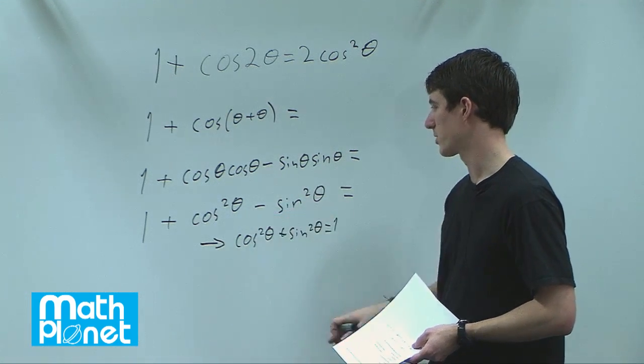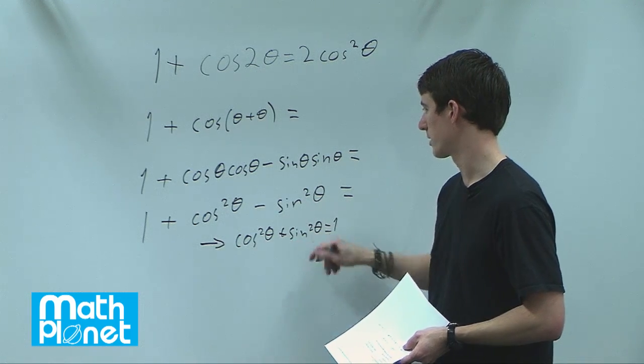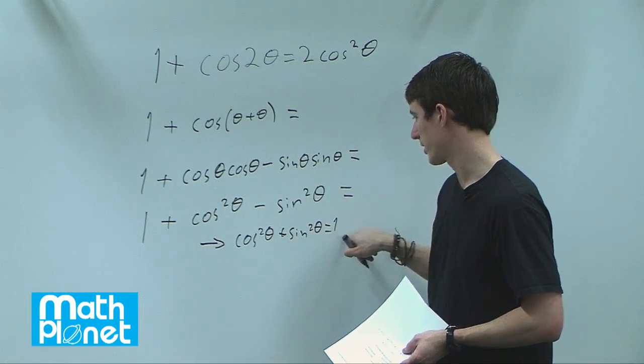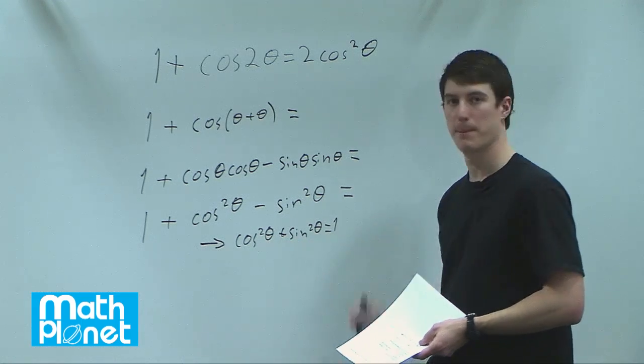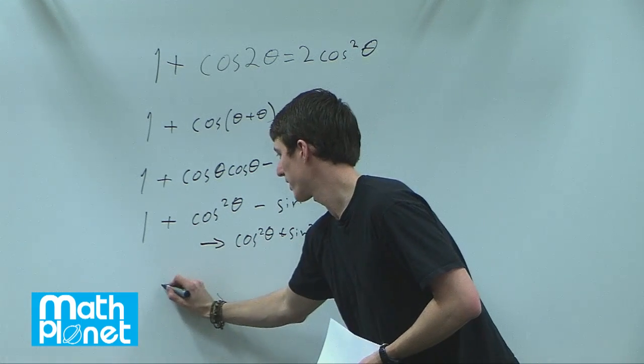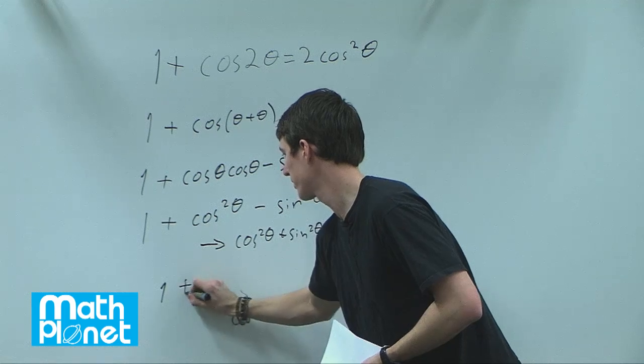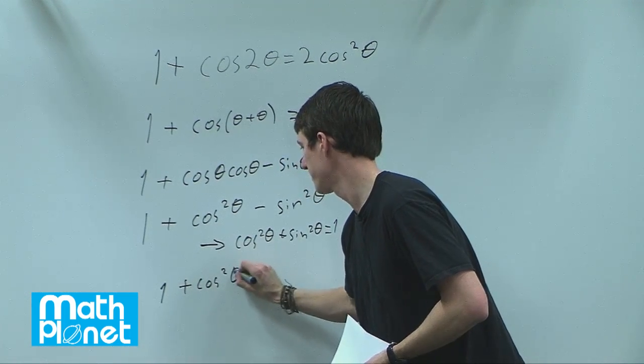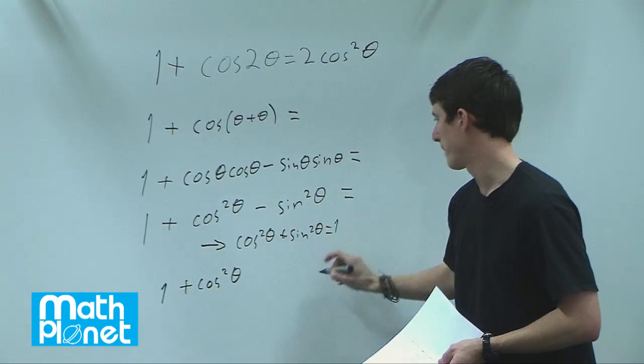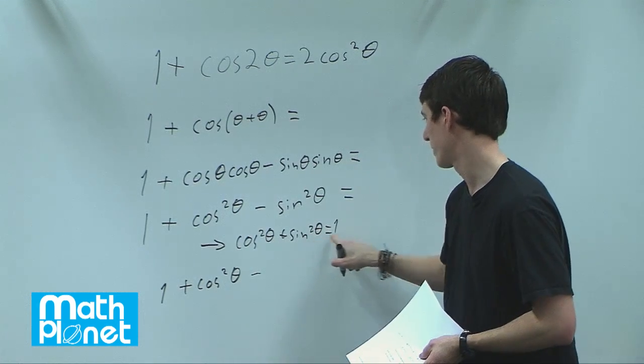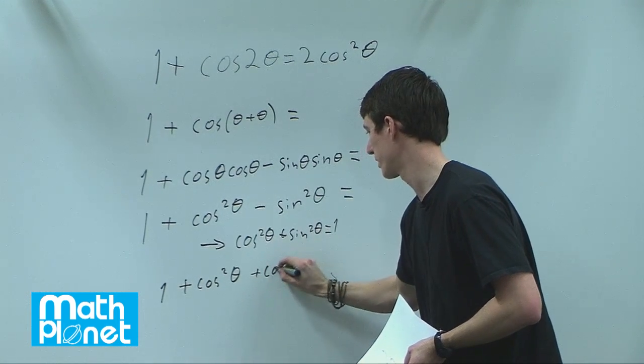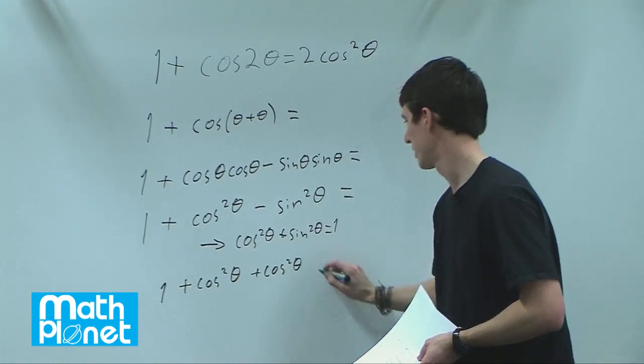So it's minus, we have a minus here, we'll have cosine squared minus 1. So let's write this as 1 plus cosine squared theta, and then we have minus, here we have minus cosine, so plus cosine squared theta minus 1.